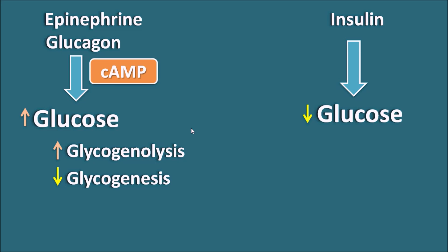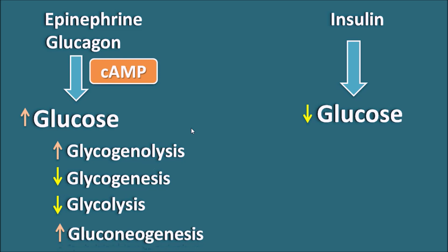Cyclic AMP can also affect two other mechanisms: it can inhibit glycolysis, that is the conversion of glucose into pyruvate, and it can also increase gluconeogenesis, the synthesis of glucose from non-carbohydrate sources. By all these processes, cyclic AMP increases the glucose levels in the body.